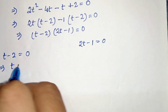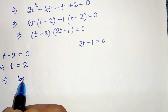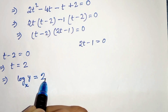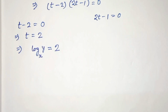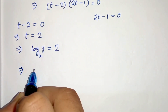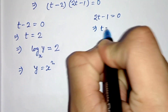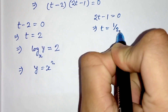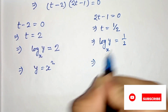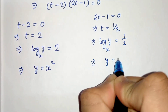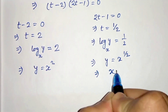From this, t equals 2 or 2t minus 1 equals 0, giving t equals 1/2. Since t equals log of y base x, when t equals 2 we get y equals x squared. When t equals 1/2, log of y base x equals 1/2, so y equals x to the power 1/2, which means x equals y squared.